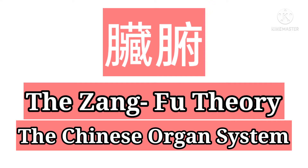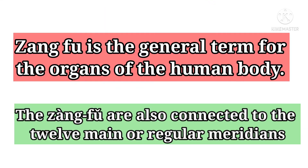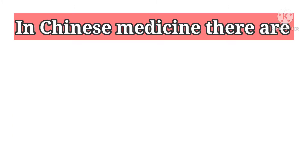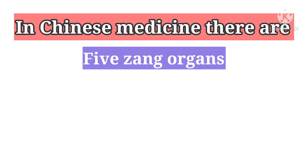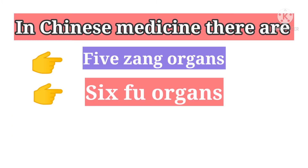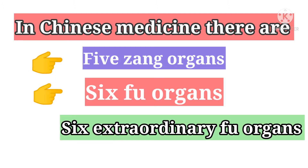The Jiang Fu Theory. Jiang Fu is the general term for the organs of the human body. In Chinese medicine, there are five Jiang organs, six Fu organs, and six extraordinary Fu organs.